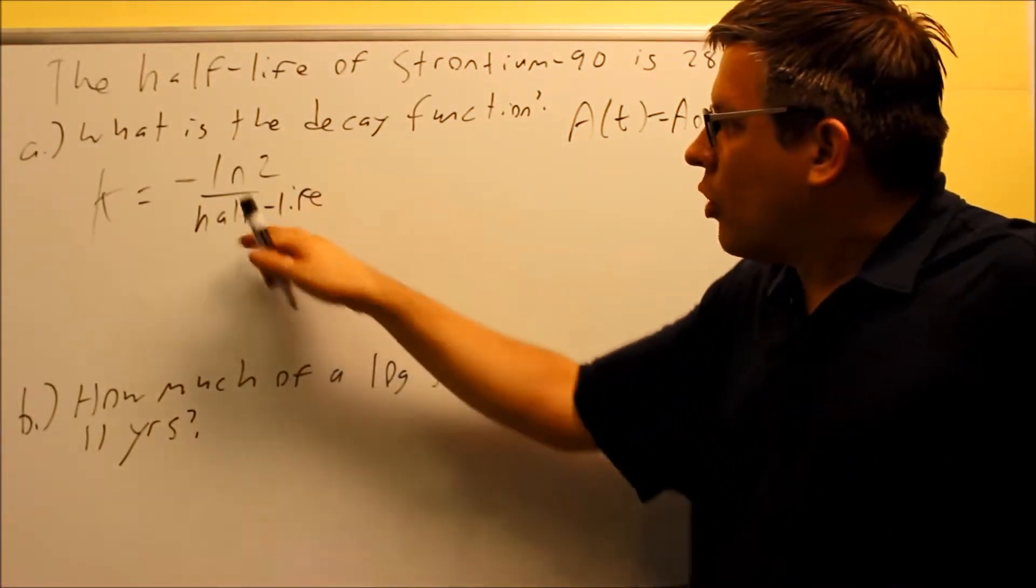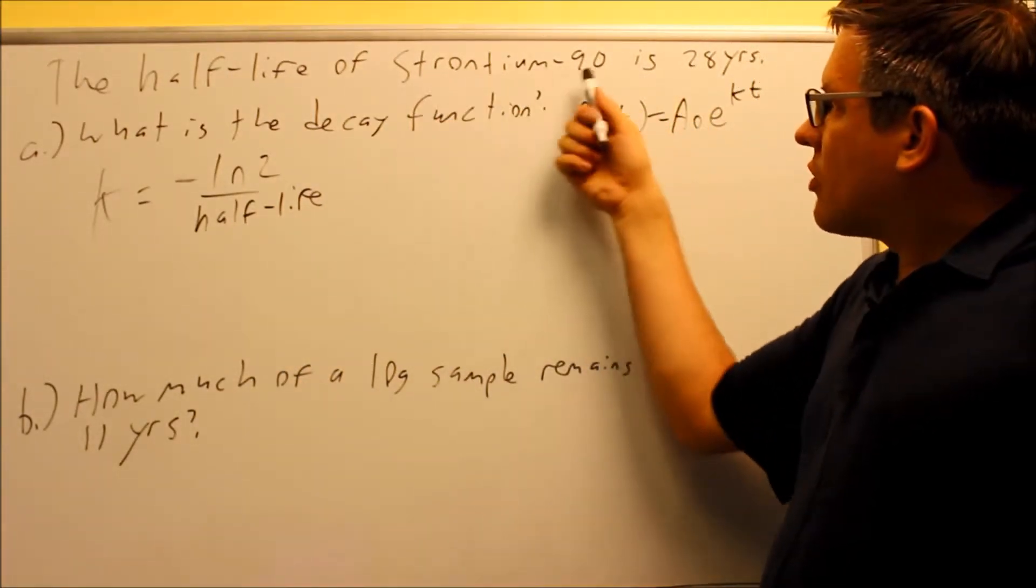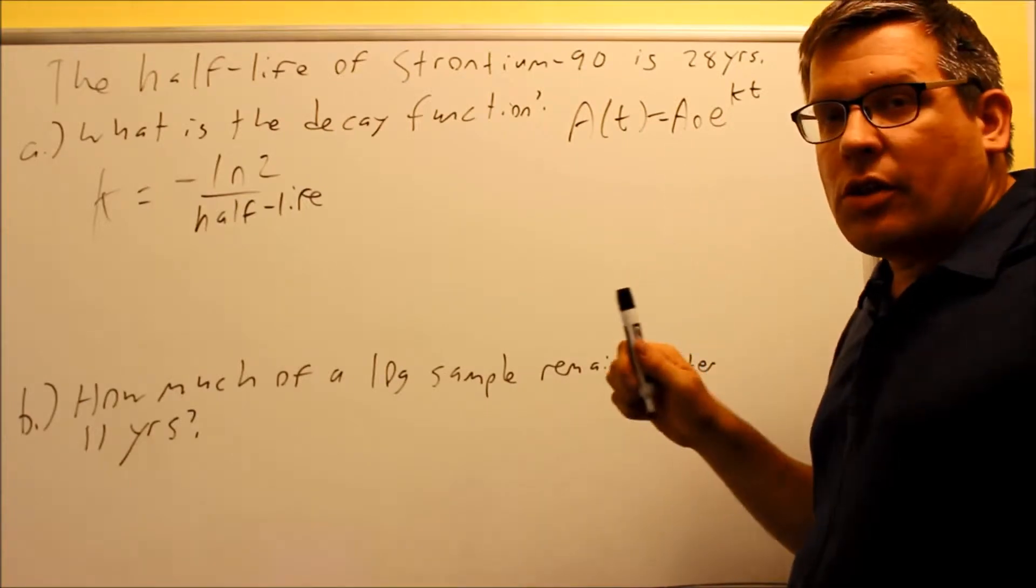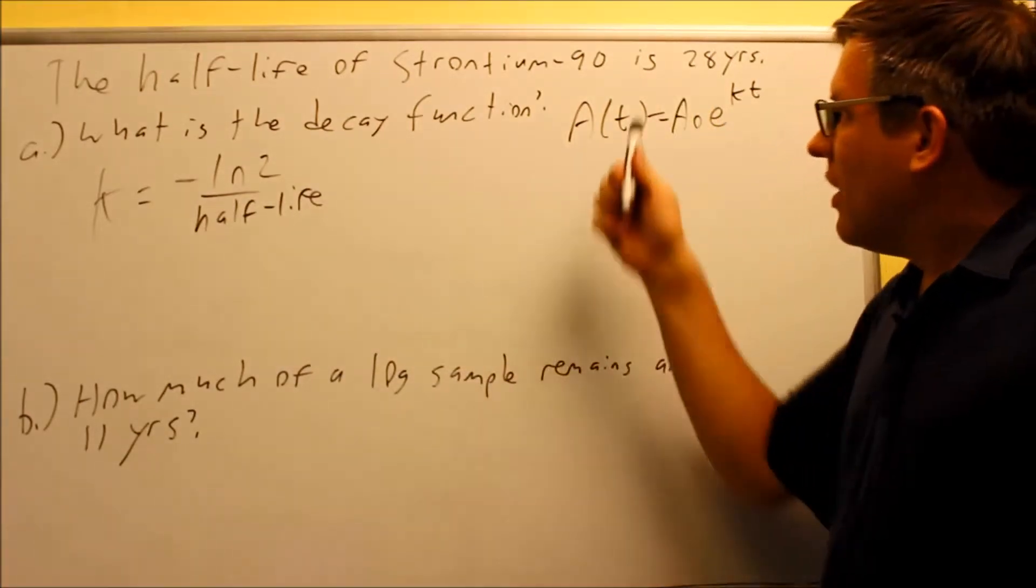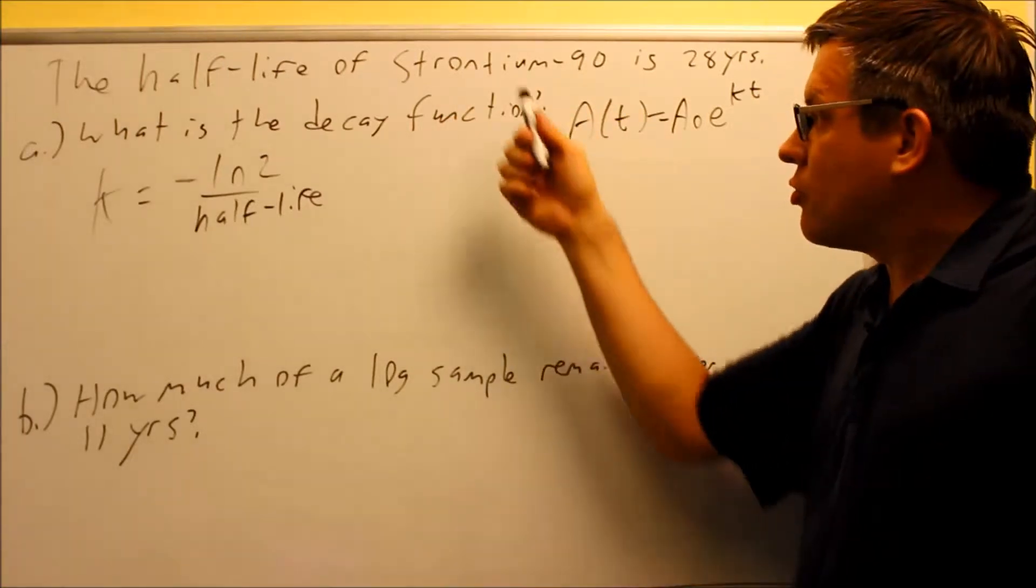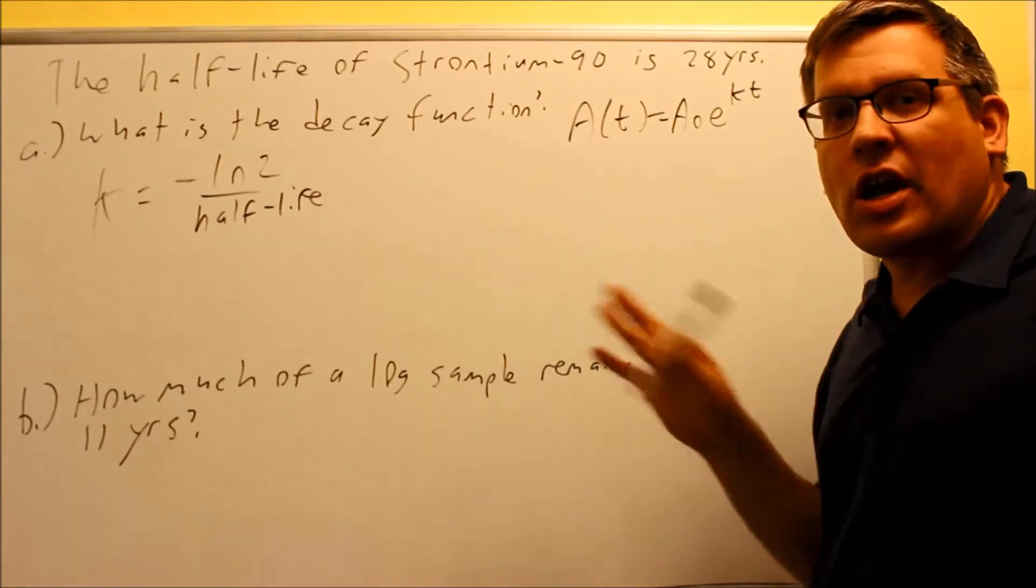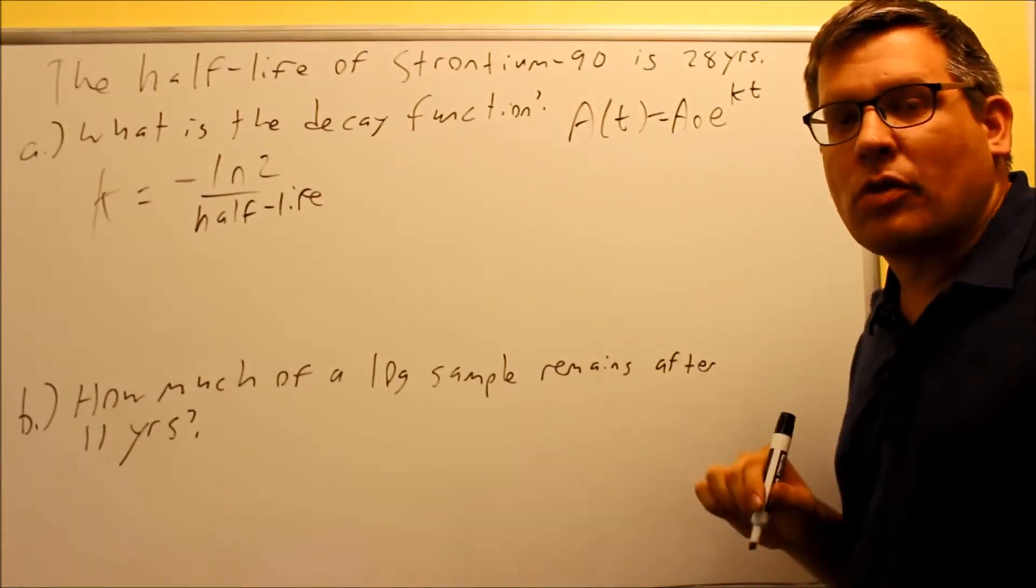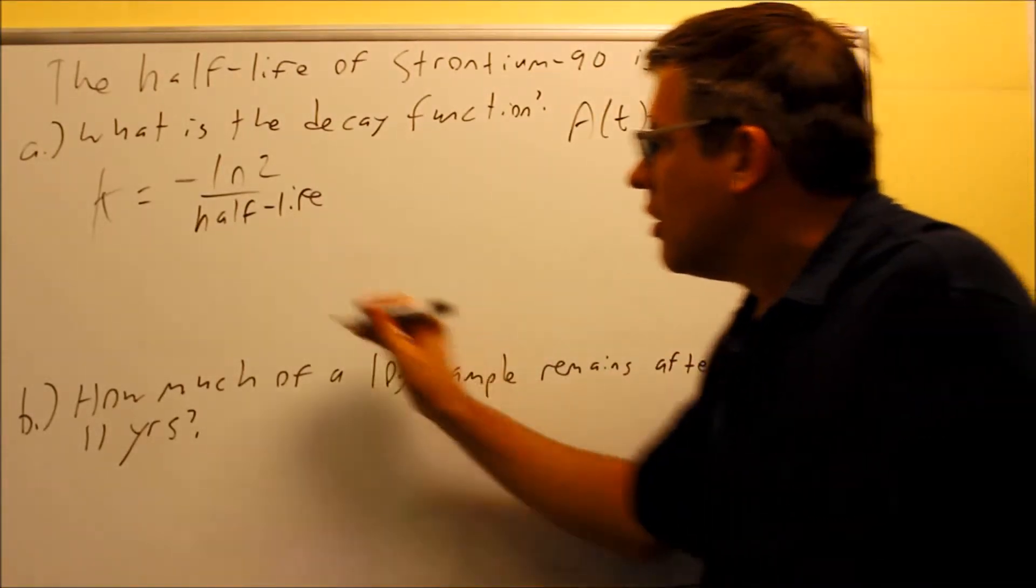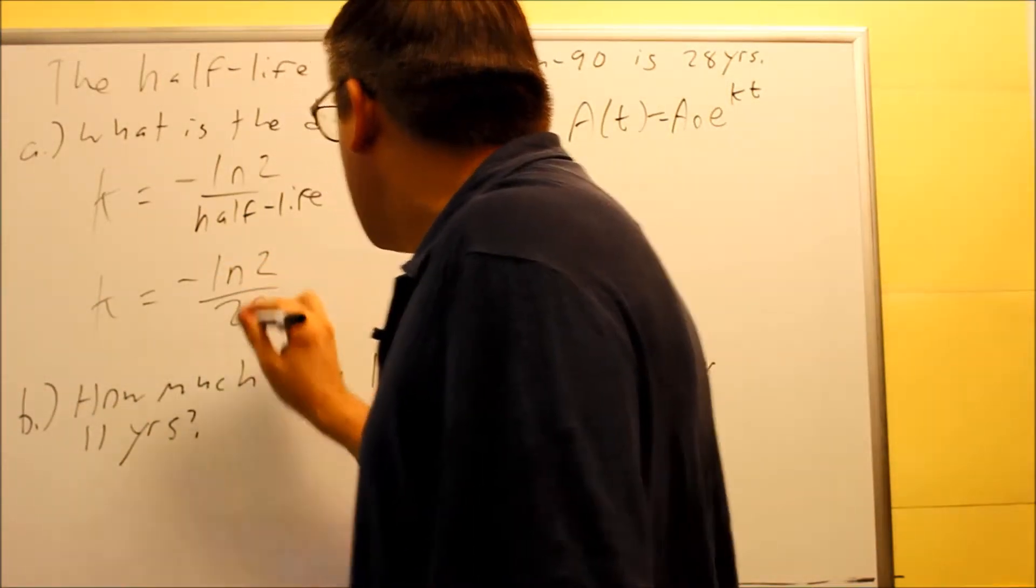We want to find out what the k-value is in this case. Now when you look at the problem, we've got strontium-90 and we have a 28 there. You want to use 28 years, that's your half-life. The 90 is actually part of the name, it's an isotope name, so strontium-90 is the whole name of the substance we're looking at. The 90 is not used anywhere in the problem at all, that's just the name of the substance. So we want to use 28, so we put that in there.